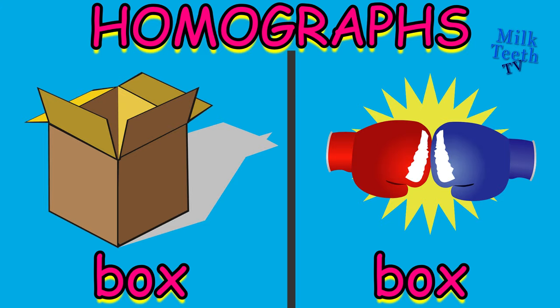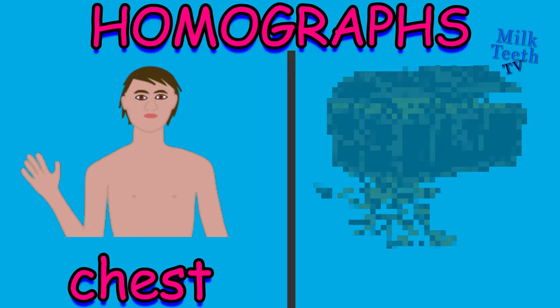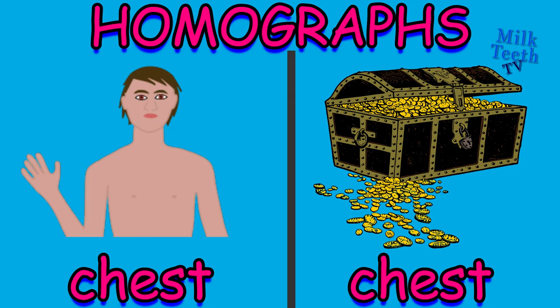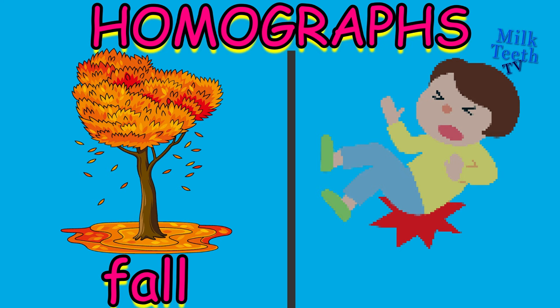Chest — the area below the neck in the human body. And chest — this is a treasure chest. Fall — the season of fall, when the leaves come down. And to fall down.